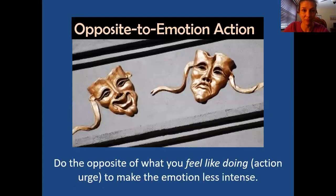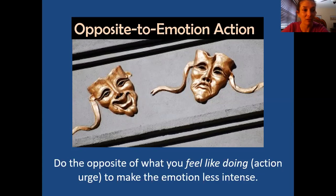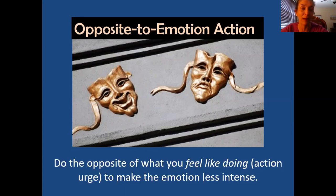Next — opposite to emotion action. This one is about your action urge. It's about identifying what the emotion is and what you feel like doing, and then doing the opposite of what you feel like doing. If you act with the emotion, the emotion tends to increase. But if you act the opposite, the emotion tends to decrease and you start to calm down. For example, if I was really angry and felt like punching somebody, and I started punching my pillow or kicking the wall, my anger would probably increase. If I did the opposite and gently walked away from the person or thing making me angry, that would make the emotion decrease.